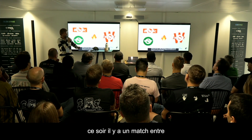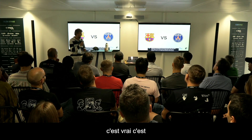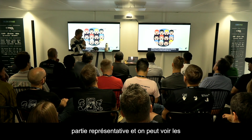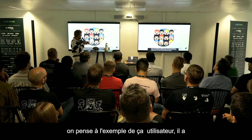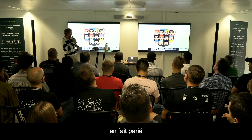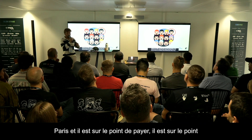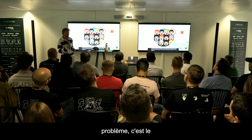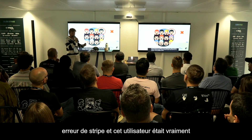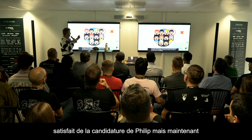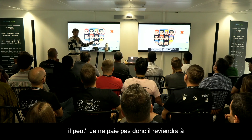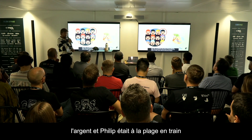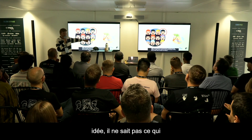But we have a problem. Tonight there is a match between Barcelona and Paris Saint-Germain. This is a part of Philip's users, and you can see next to each of them the money they bet. One user bet $2,220 on Paris and is about to pay — but he faces a problem: a Stripe error. This user was really happy with Philip's application, but now he can't pay, so he'll go back to Unibet. Philip lost the customer and also lost money. And Philip was at the beach drinking a Mojito — he has no idea what happened.